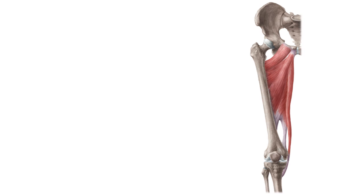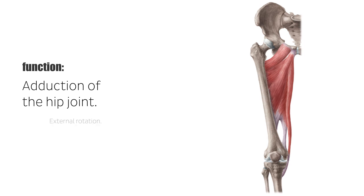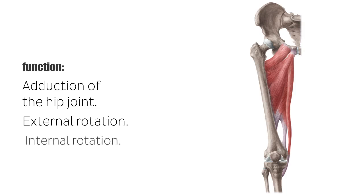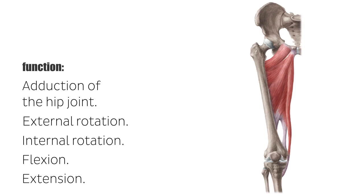As the name suggests, the main function of the hip adductors is the adduction of the hip joint. Furthermore, they support outward rotation, inward rotation, flexion, and extension. Being the only two-joint adductor, the gracilis muscle moves the knee joint as well, where its contraction causes flexion and inward rotation. The hip adductors are particularly used when crossing one's legs, and overall they play an important role in balancing the pelvis during standing and walking.